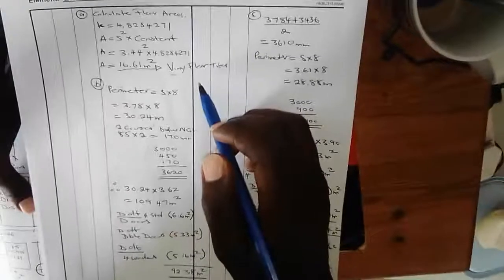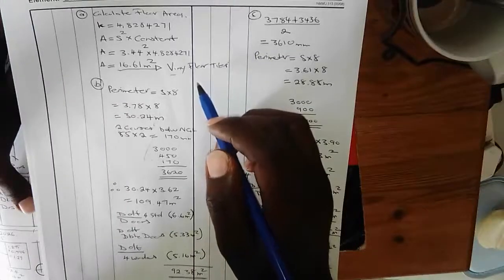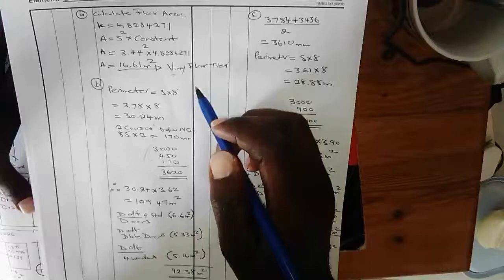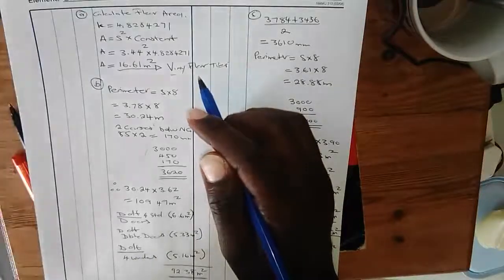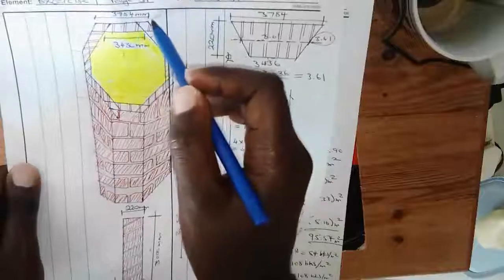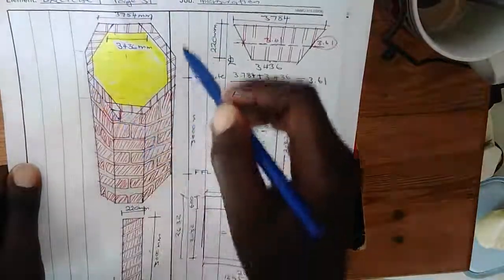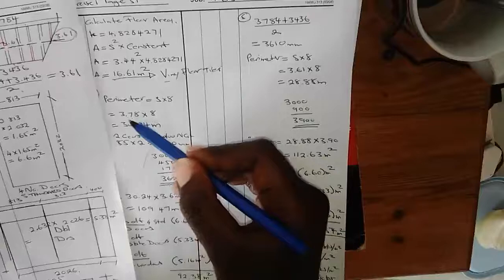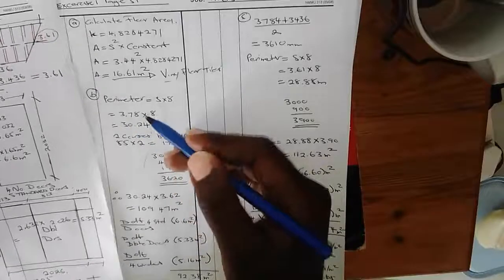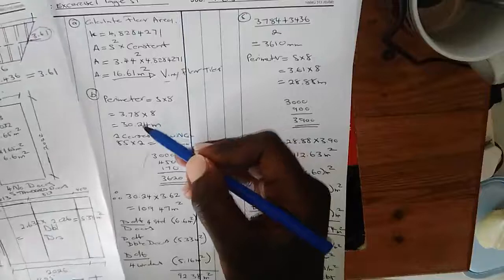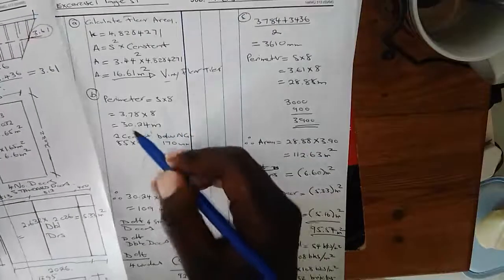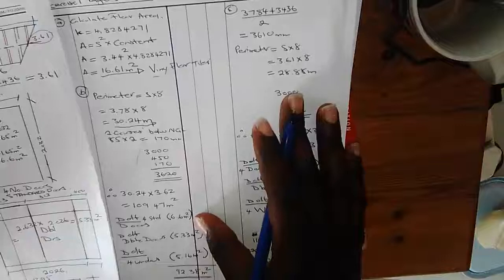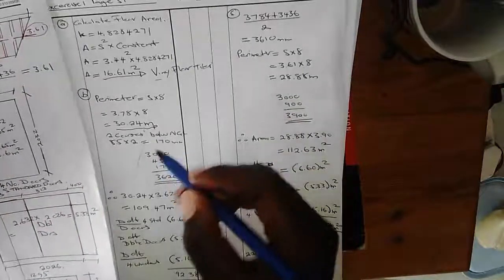To get the external surface area we need to know the perimeter, which refers to the distance around an object — from here to here to here, all the way around. We take our external dimension of 3.78m and multiply it by eight sides, since an octagon is an eight-sided figure. That gives us 30.24 meters.